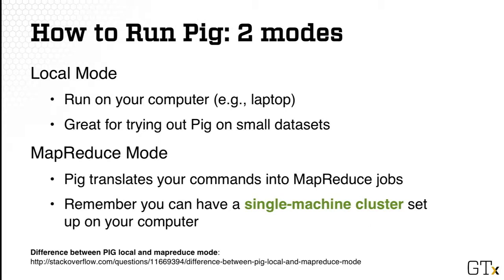There are two ways to run PIG. One is the local mode, which is great for smaller datasets and can be run on your computer. The program will not be converted into a MapReduce program. Another mode is MapReduce mode, where your program will be converted into a MapReduce program, which can then be run on a Hadoop cluster. Since you can set up a single machine cluster using your own computer, you can try both modes easily.